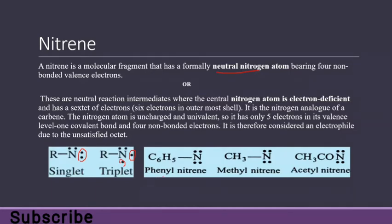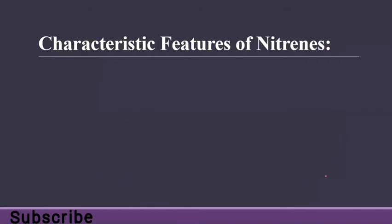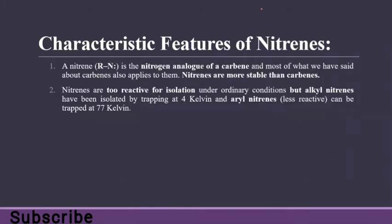This is methyl nitrine, and this is acetyl nitrine — nitrogen attached with one molecule and four non-bonded valence electrons. So this is nitrine. The characteristic features of nitrine are that it is the nitrogen analog of carbene, and most of what we said about carbene also applies to nitrines.